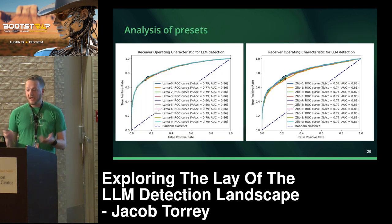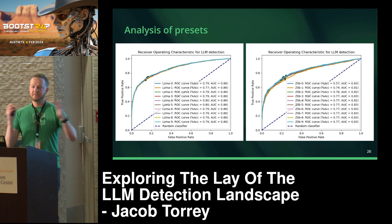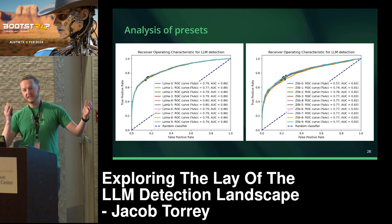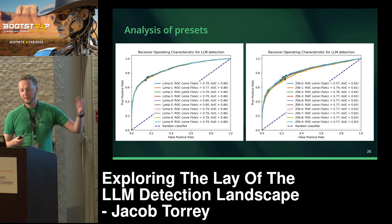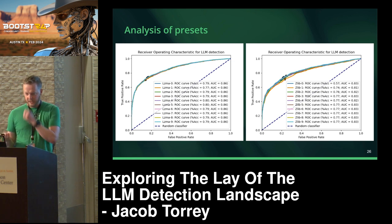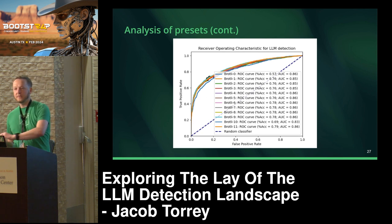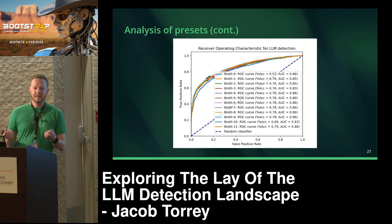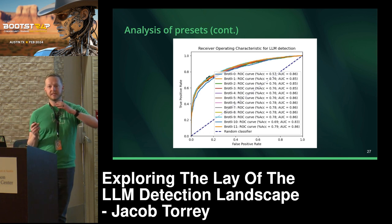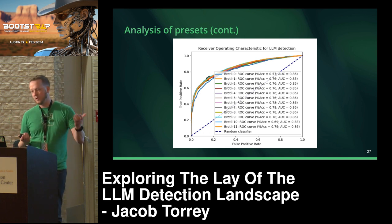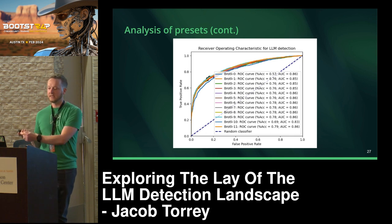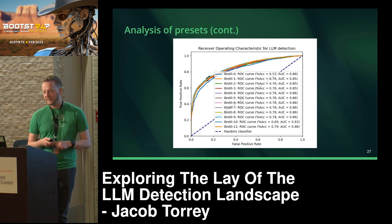Then I looked at the different compression presets — this changes basically how much is added to the dictionary and how much computational lookback there is. For LZMA, they're almost exactly the same across presets. For Zlib, you get a little bit better performance in the middle range. For Brotli, it goes up pretty well and then drops back down — a pretty small change overall. You get a lot of computational benefit in terms of performance by using a lower preset, so Brotli 0 is very fast compared to Brotli 11, and they have similar area under the curve. The accuracy differs slightly but that's adjustable.